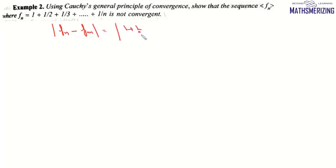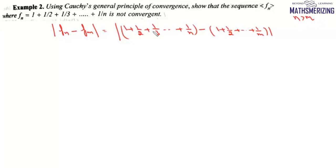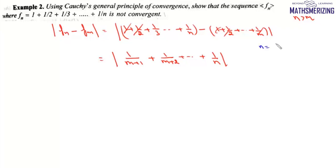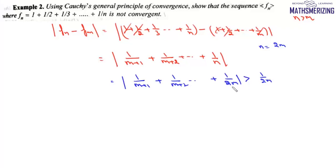We consider |fn minus fm| where n is greater than m. The common terms cancel, leaving 1/(m+1) plus 1/(m+2) up to 1/n. If we choose n = 2m, this sum becomes 1/(m+1) plus 1/(m+2) up to 1/(2m), which is greater than m times 1/(2m), giving us a value greater than 1/2.